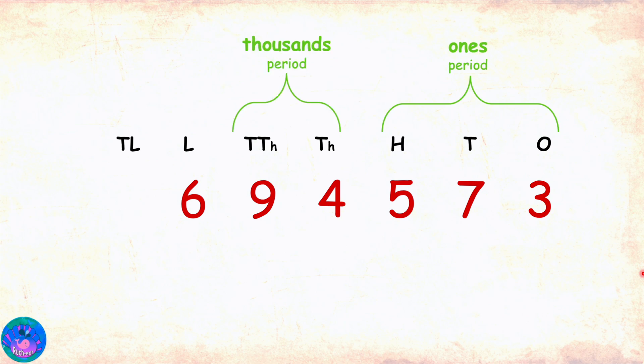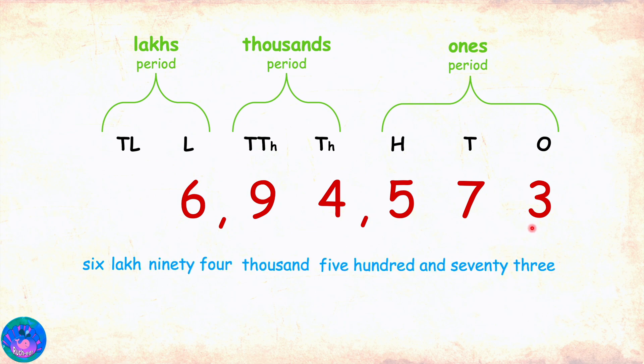Now, do this one. Six, nine, four, five, seven, three. Six digits. So, we have number places from ones through lakhs in use here. The periods are ones, thousands, and lakhs. Placing comma between the periods and the number is six lakh ninety-four thousand five hundred and seventy-three.